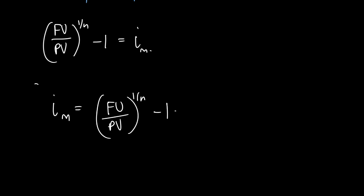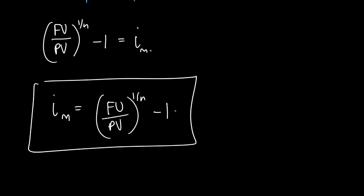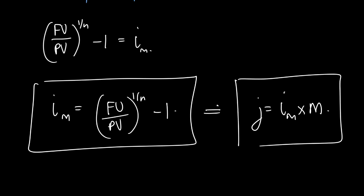There we have the formula to work out i, the effective interest rate. If we can work out the effective interest rate, we can also work out the nominal interest rate, because the nominal interest rate j = i/m × m. So once you work out the effective interest rate, you can get the nominal interest rate. Let's go do some examples.